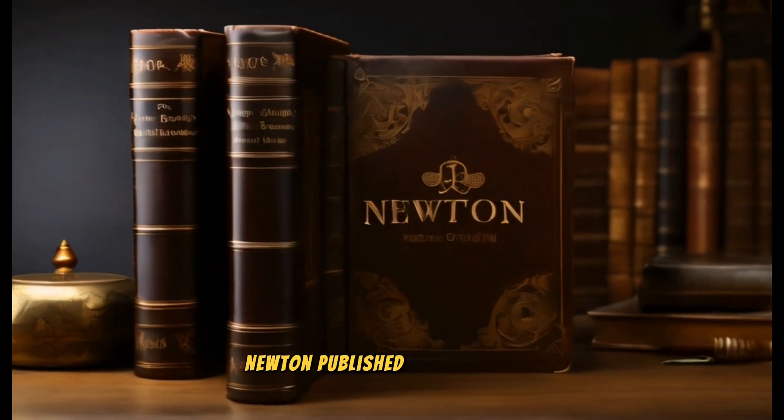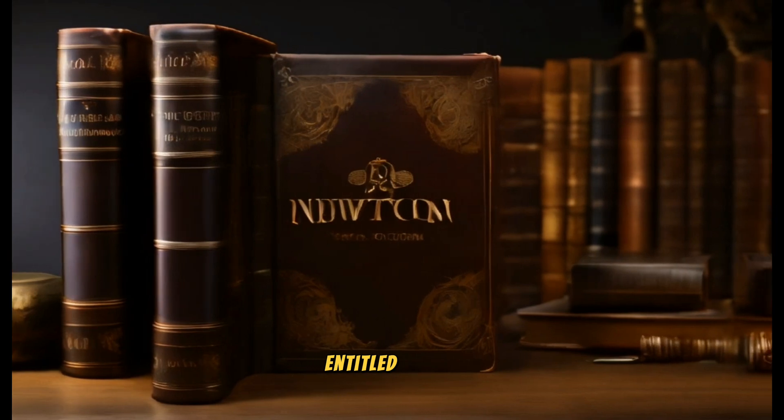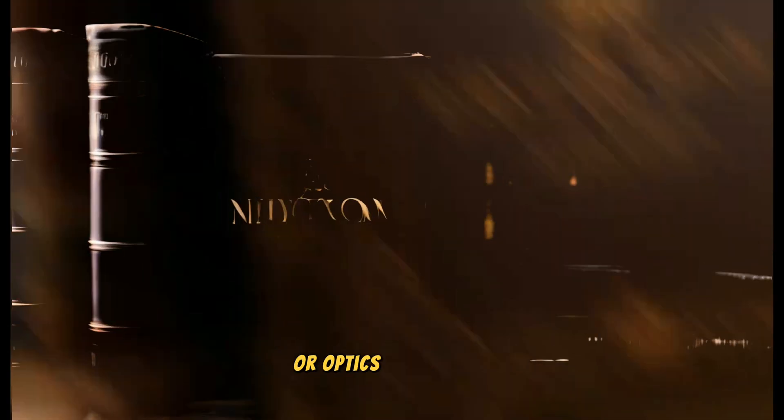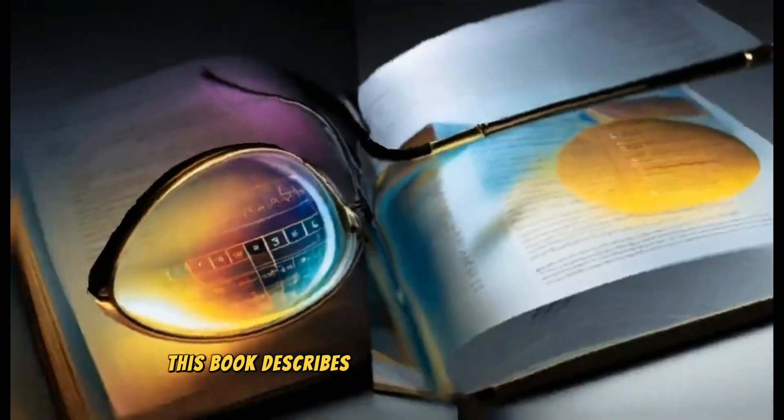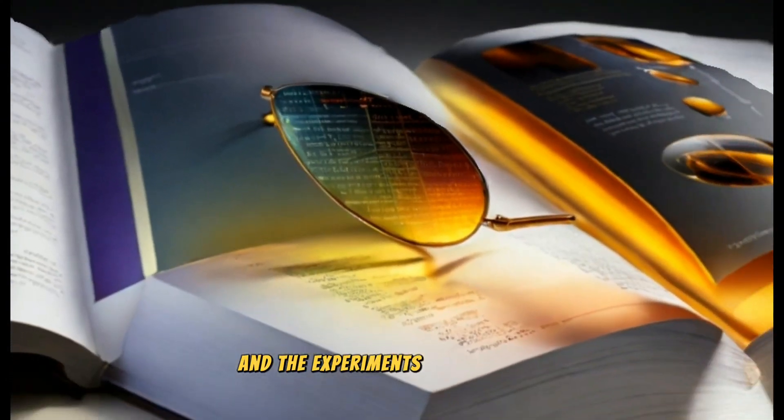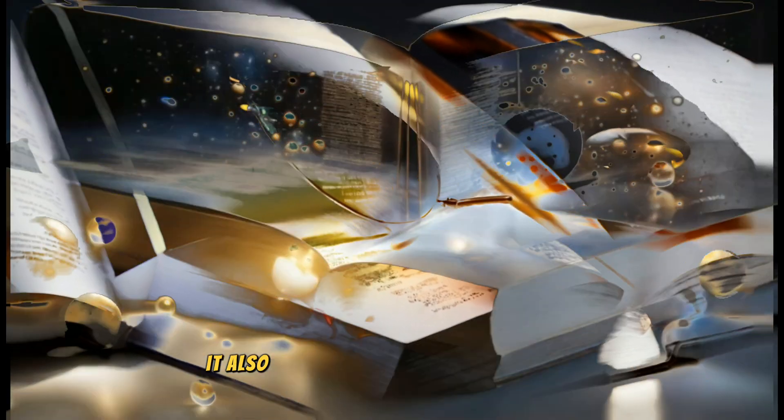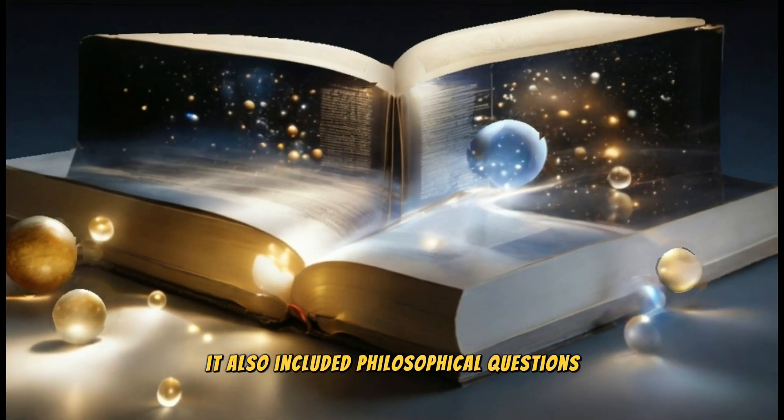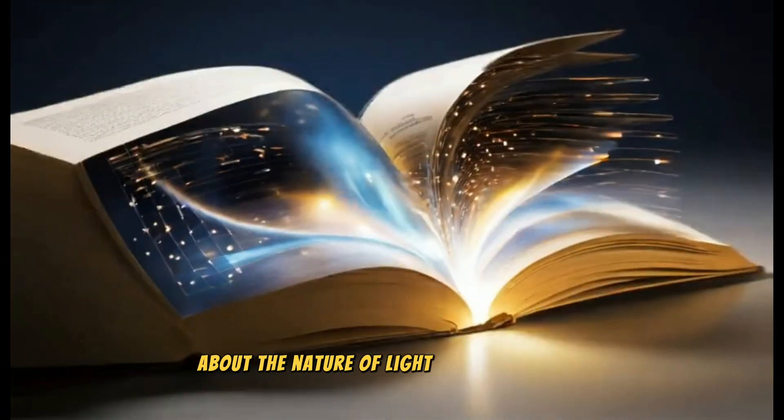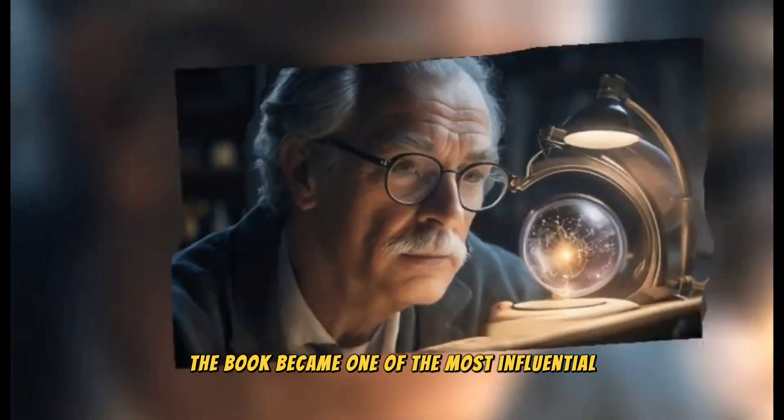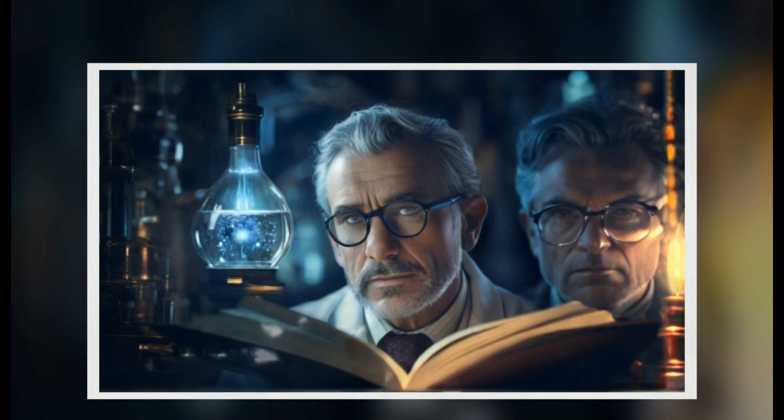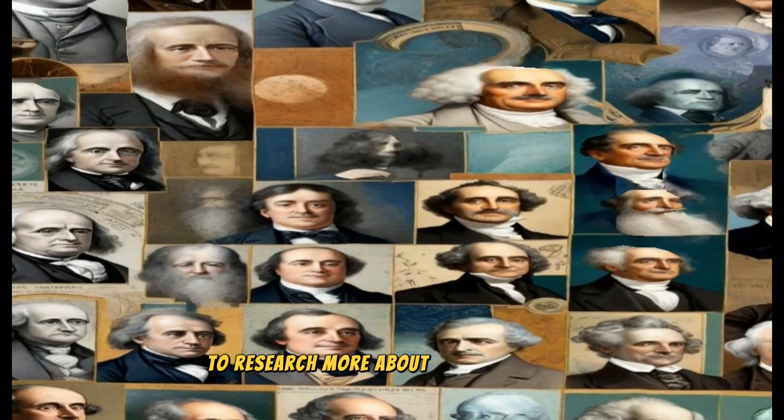Newton published his first book, entitled Optics, in 1704. This book describes in detail color theory and the experiments he conducted. It also included philosophical questions about the nature of light and the universe. The book became one of the most influential scientific works in history, and inspired many other scientists to research more about light and color.